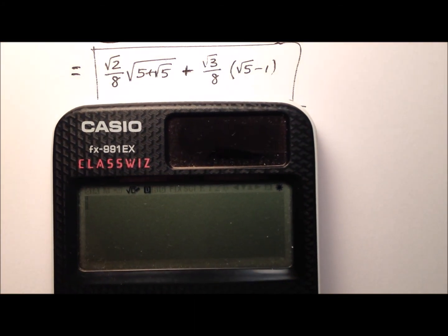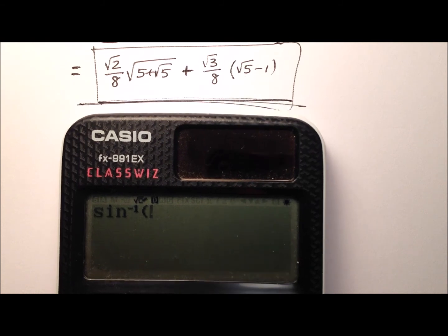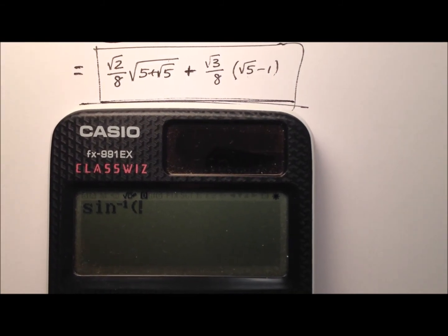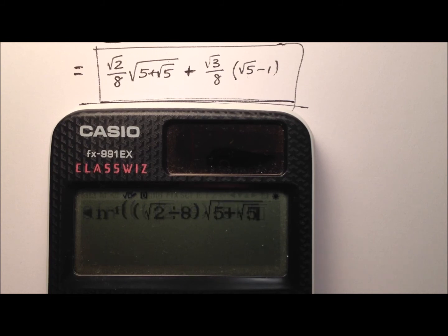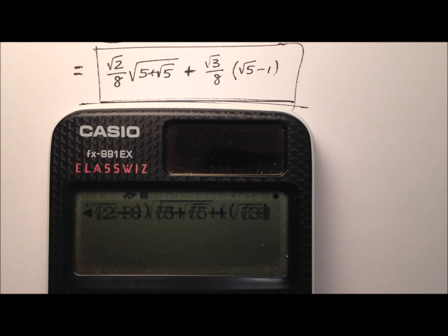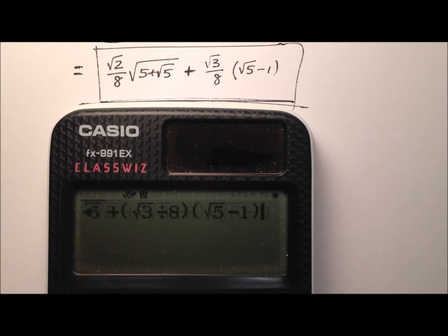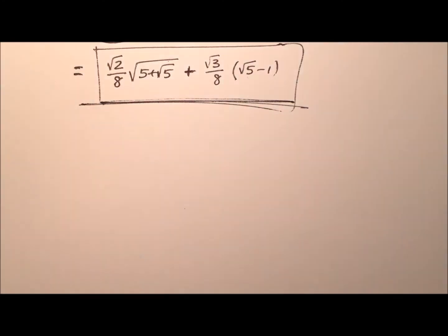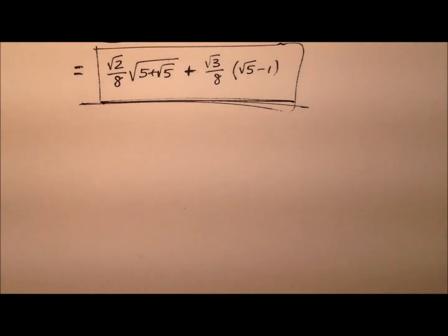So what we're going to do is take the inverse sine and put this expression in to see if we get 48 degrees. We have first the square root of 2 divided by 8, multiplied by that radical expression, and then we add the square root of 3 divided by 8, multiplied by (√5 − 1). And yes — 48 degrees. So we see right here we have the exact value for the sine of 48 degrees.